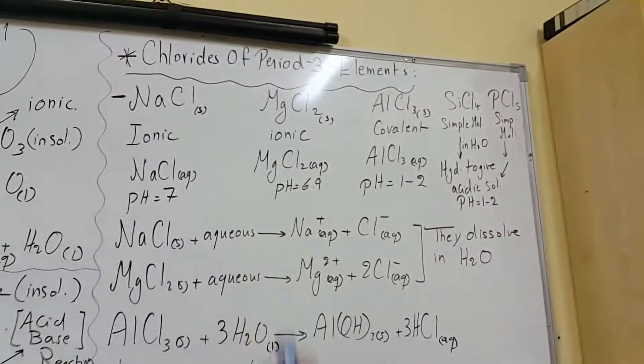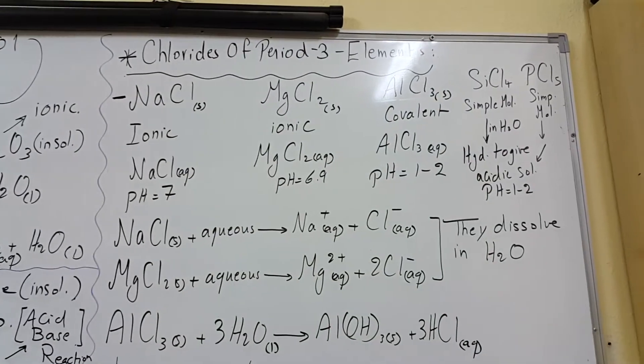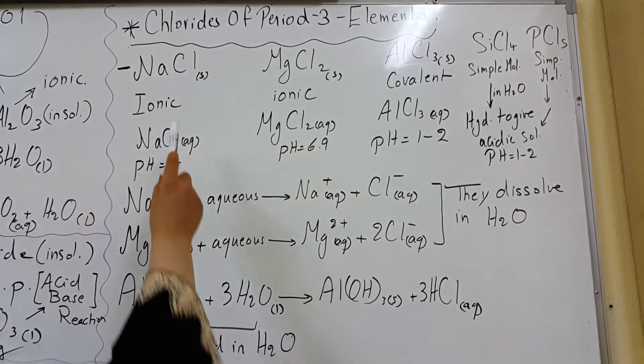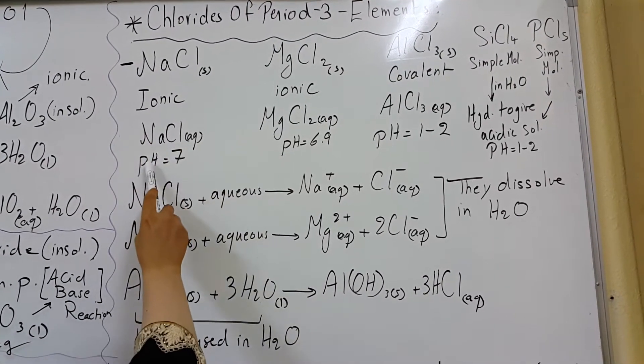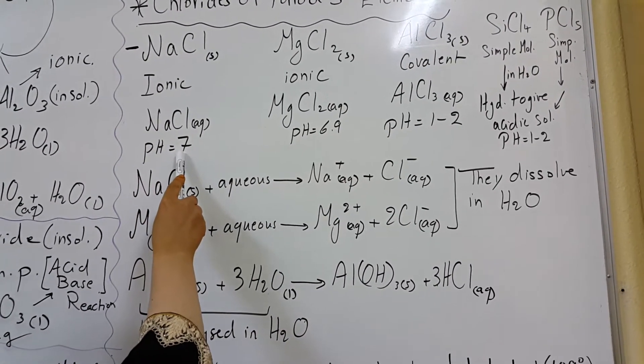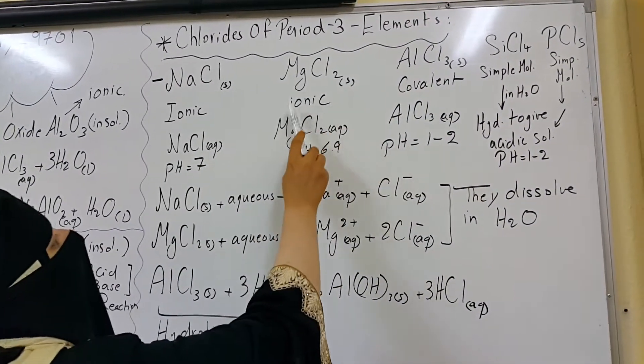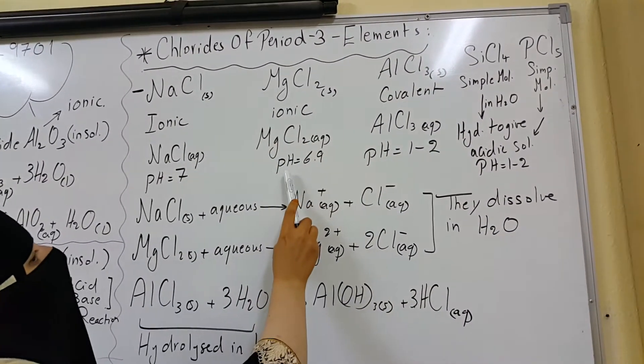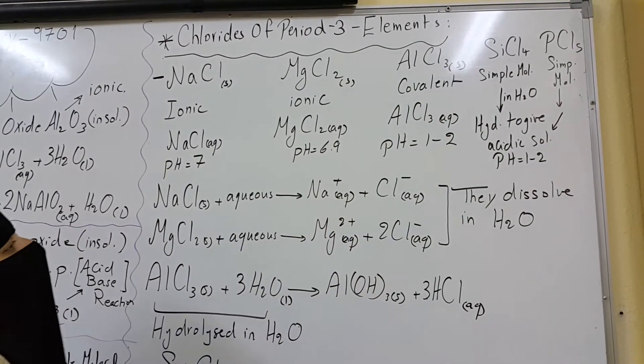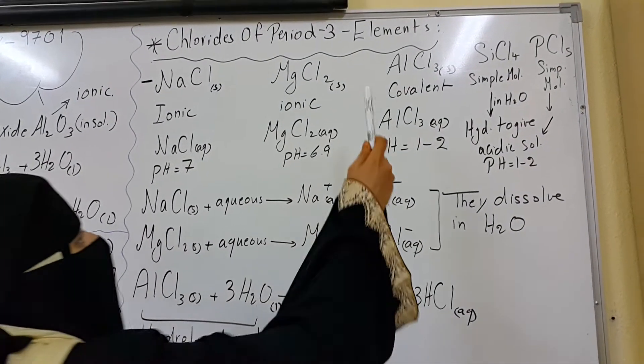Let's look at the reactions of period 3 elements with chlorine. Sodium forms an ionic chloride, which has a pH equal to 7 in its aqueous solution. Magnesium chloride is a solid that has an ionic structure with slightly acidic solution. When it dissolves in water, it forms a slightly acidic solution.